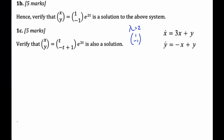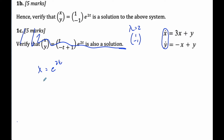Now it gets a little more challenging. Looking at part (b), we want to verify that this is a solution to our system. To verify it, there are two things going on — you have to come up with two equal results by different methods. I know this gives the derivative of x and the derivative of y. So specifically, x equals e to the 2t and y equals negative e to the 2t. Taking the derivative of x, I end up with 2e to the 2t by the chain rule.